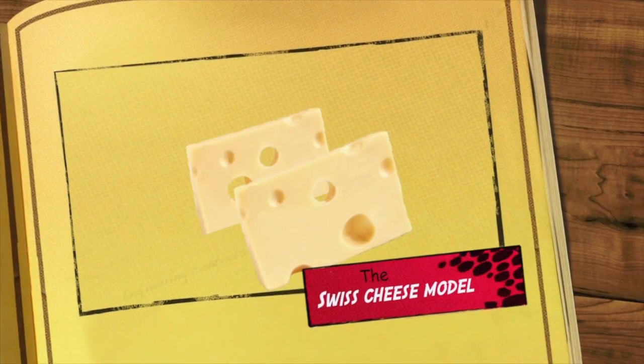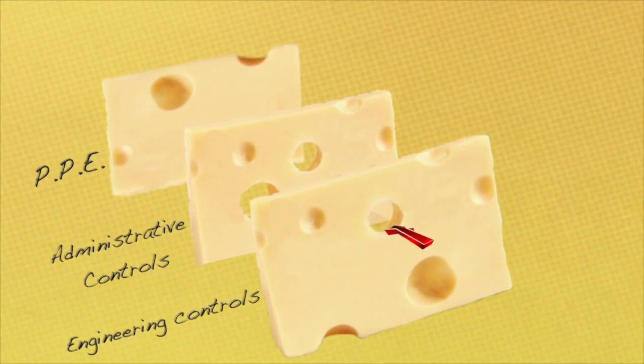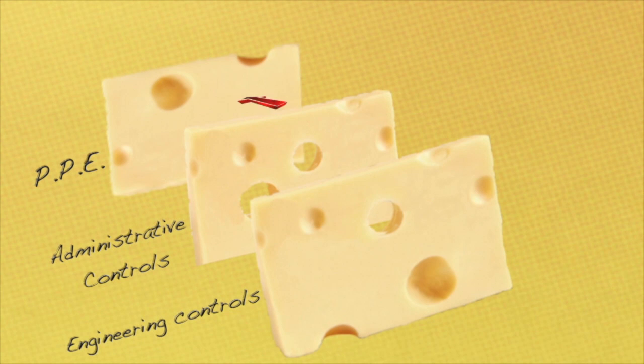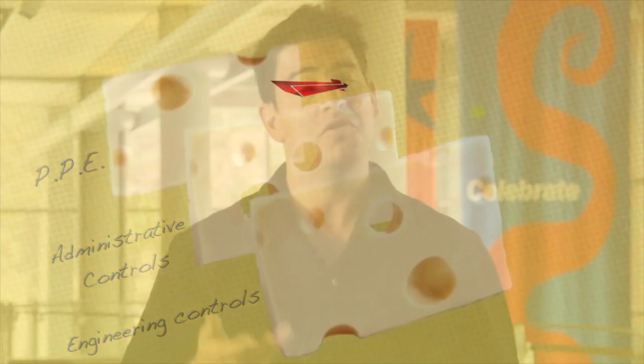It's helpful to think about the Swiss cheese model. Each layer represents a defense against failure, but the holes show that not one layer is perfect. Today we want to talk to you about your last layer of defense, your personal protective equipment or your PPE.